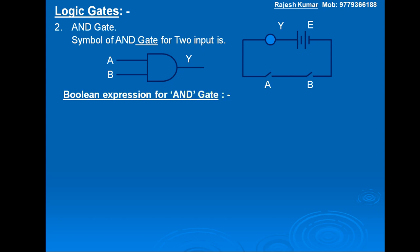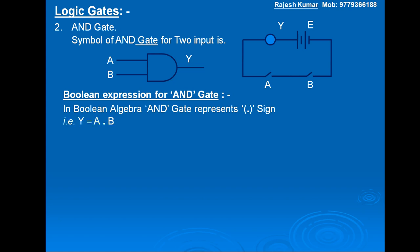Now the Boolean expression for the AND gate. In Boolean algebra, the AND gate is represented by a dot sign, meaning multiplication. That is, Y is equal to A dot B, meaning in the AND gate output Y equals A AND B, i.e., Y = A·B represents that output Y is equal to A and B.